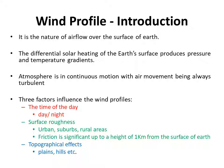The differential solar heating of the earth's surface produces pressure and temperature gradients. The atmosphere is in continuous motion with air movement being always turbulent.